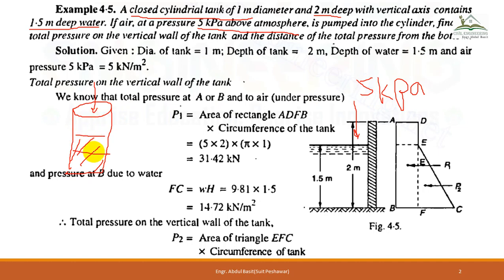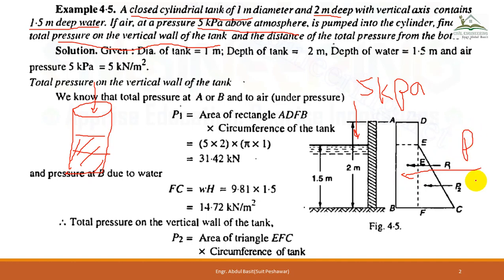We need to find the pressure distribution due to the water and air on the side walls of the cylinder, and also the total pressure on the vertical tank wall and the distance of the total pressure from the bottom. The distance from the bottom is h-dash, and both need to be determined.